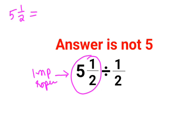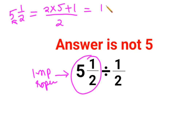The improper fraction will also continue to have the same denominator. The only change which happens is in the numerator — the denominator gets multiplied by the integer part, which is 5, and then 1 gets added to it. So you get 11/2. The question now changes to 11/2 divided by 1/2.